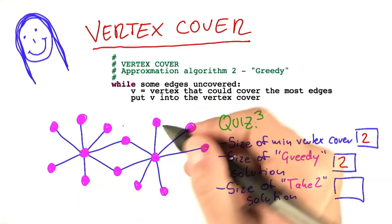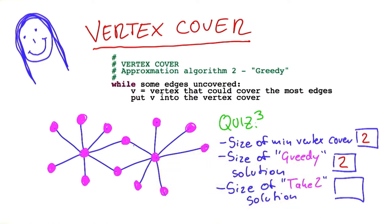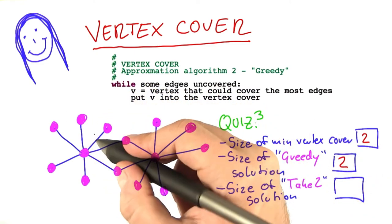Now the take 2 algorithm, on the other hand, looks a bit stupid compared to the greedy algorithm for this graph here.